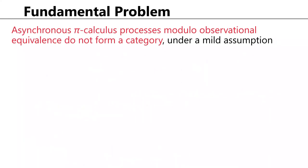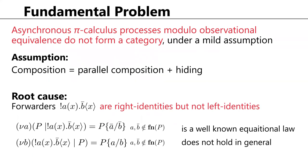In this work, we investigate how the pi calculus should be modified in order to have a categorical foundation. In our previous work, we showed that asynchronous pi calculus processes modulo observational equivalence do not form a category under a mild assumption. This situation is quite different from that of the simply typed lambda calculus, where observational equivalence is a beta-eta theory.